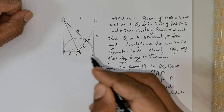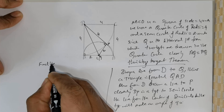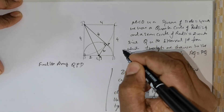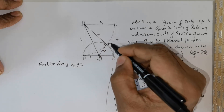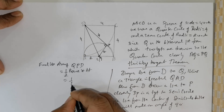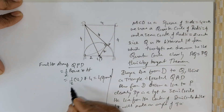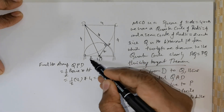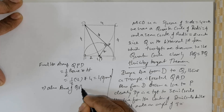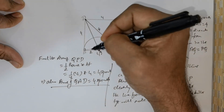From here I can get the area of the triangle. Find the area of QPD. The triangle area is half times base times height: half times 2 times 4 gives 4 square units. Clearly the base is 2 and the height is 4, which also means the area of QAD is 4 square units. So the total area is found.